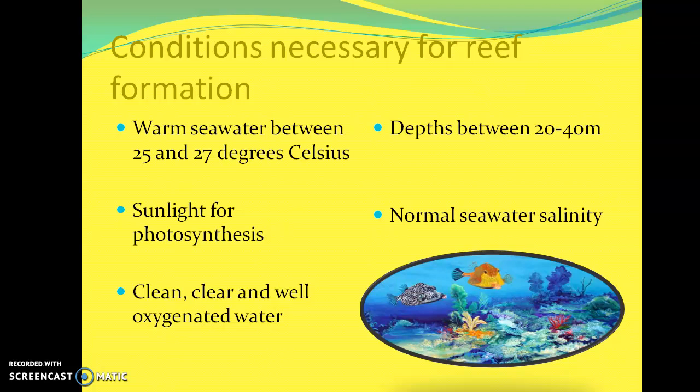The next condition is that corals require depths between 20 and 40 meters. This allows for the penetration of sunlight, and also the deeper you go, the cooler the water gets — so at 60 meters underwater it is colder than at 30 meters. This depth range provides the ideal temperature of 25 to 27 degrees Celsius that coral needs. Coral also requires salinity for survival, as coral reefs love salt water.